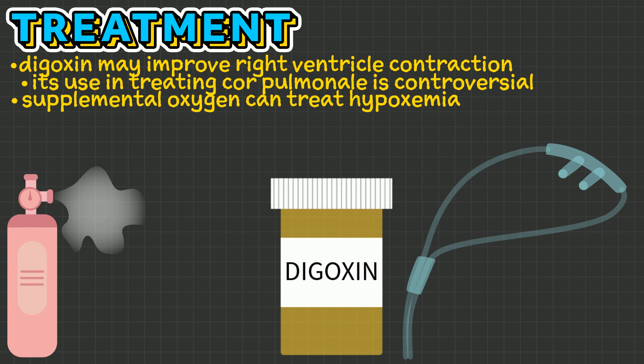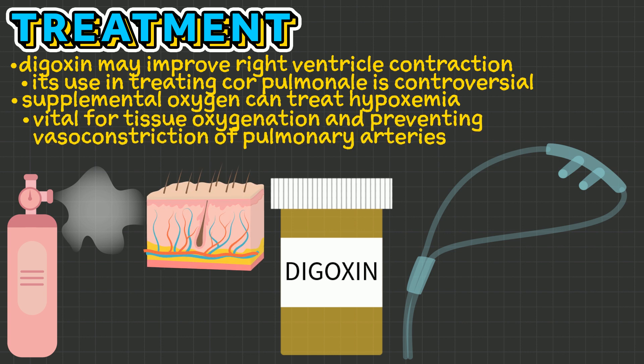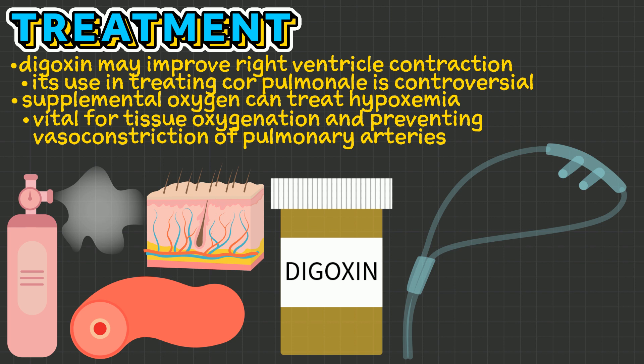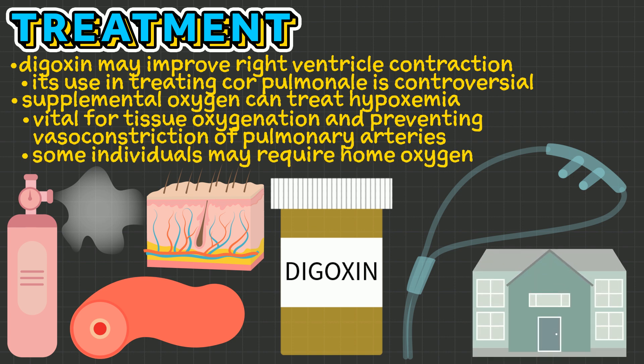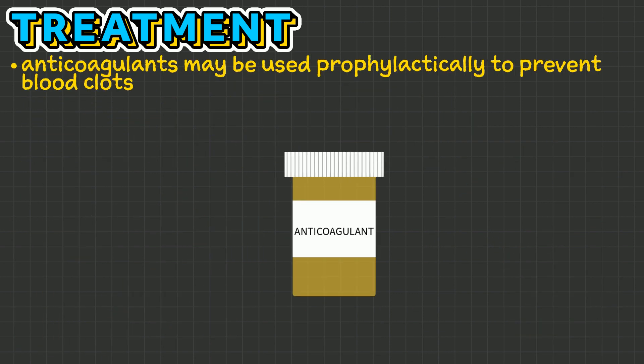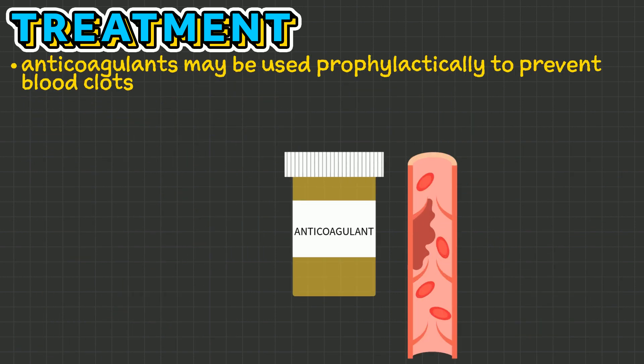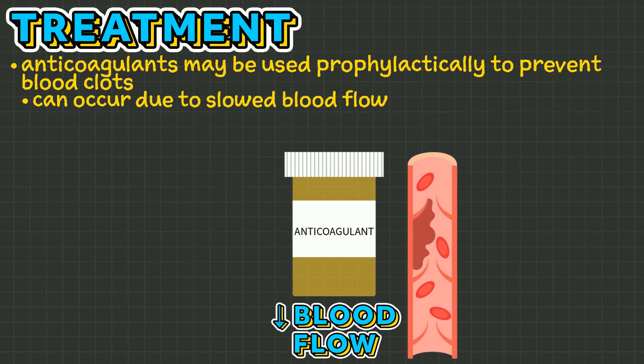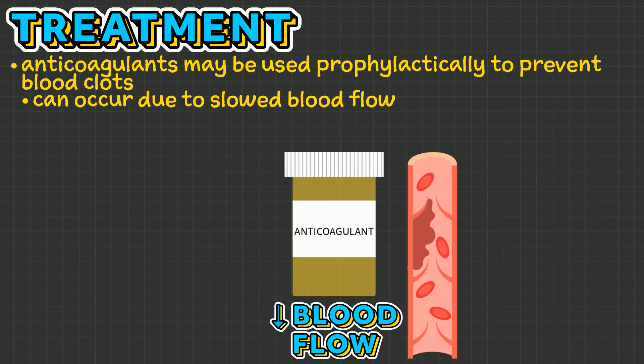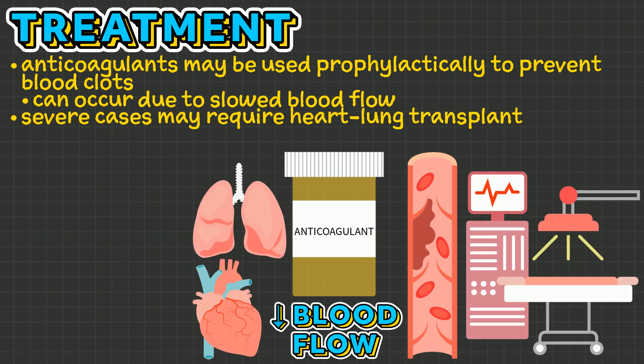Supplemental oxygen can treat hypoxemia, which is vital for tissue oxygenation and preventing vasoconstriction of pulmonary arteries that worsens pulmonary hypertension. Some individuals may require home oxygen. Anticoagulants may be used prophylactically to prevent blood clots, which can occur due to slowed blood flow in cor pulmonale. In severe cases, a heart-lung transplant may be considered.